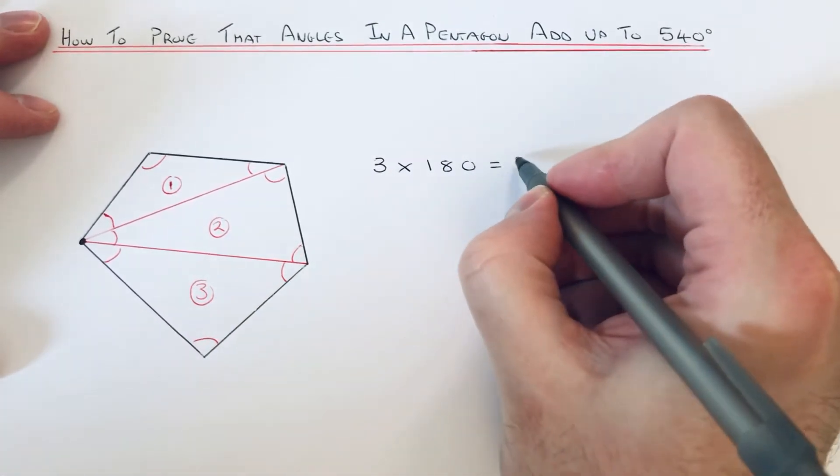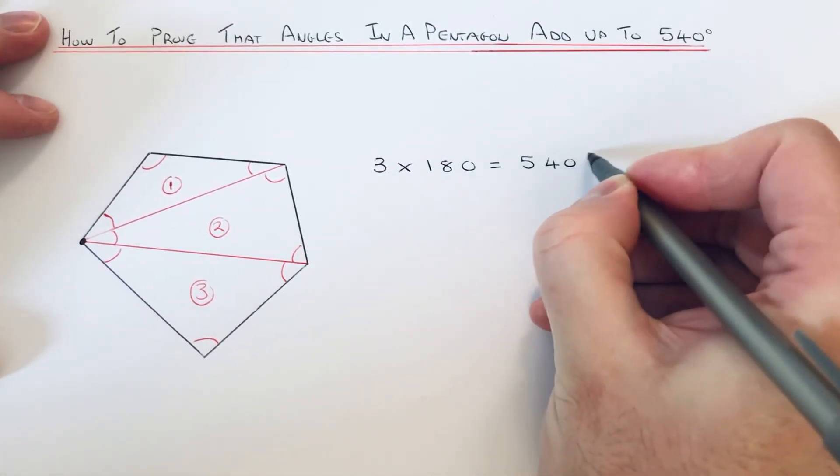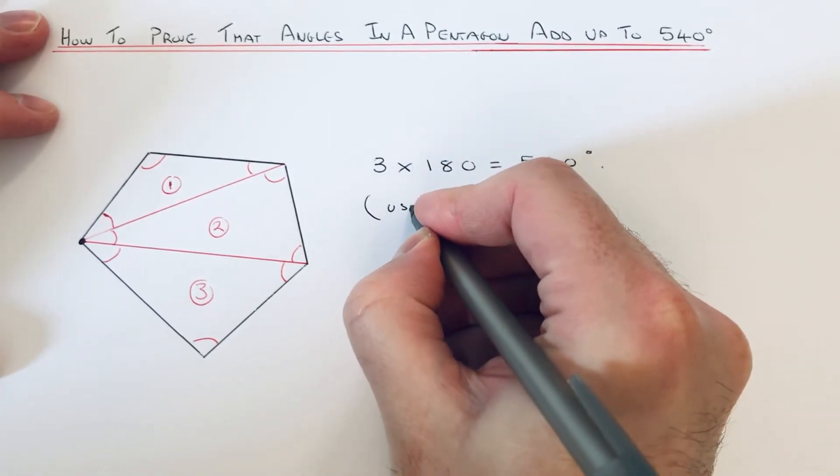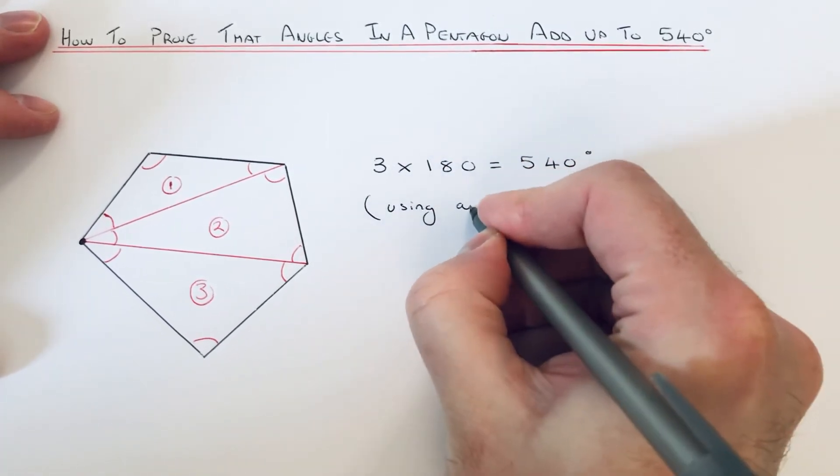So we're using angles in a triangle add up to 180.